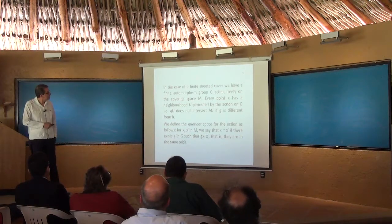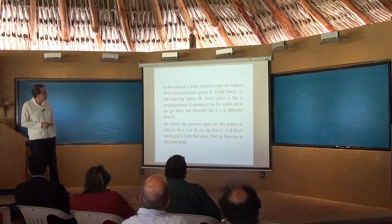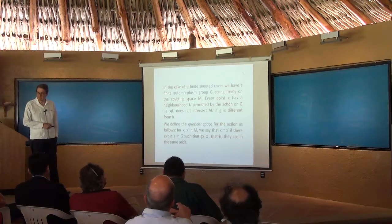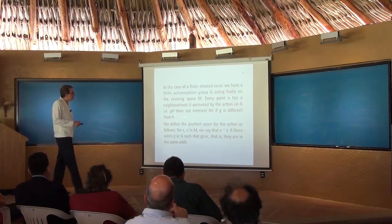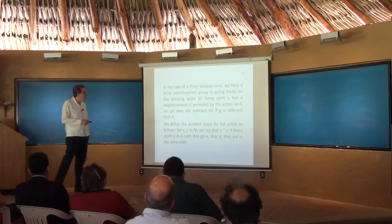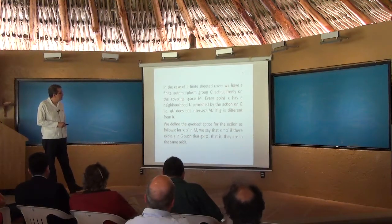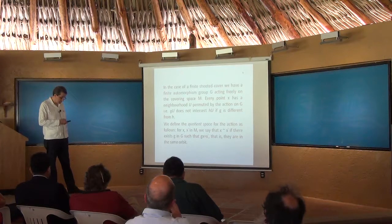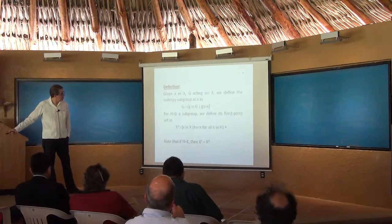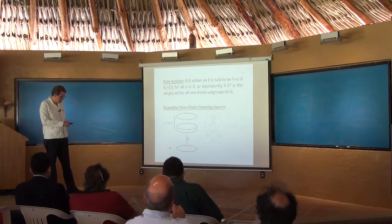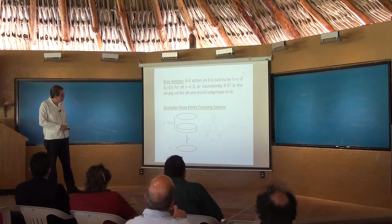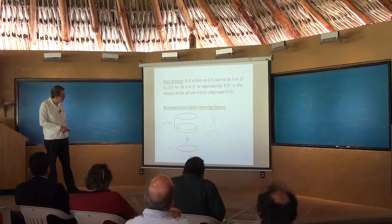A key thing you learn in your topology course: in the case of a finite sheeted cover, we have a finite automorphism group G acting freely on the covering space, and every point X has a neighborhood U which is permuted by the action of G. You have these inverse images — they are moved around, they're all disjoint, and they all cover this basic elementary neighborhood downstairs.